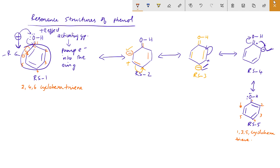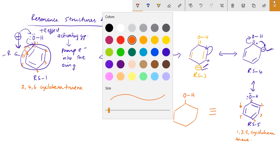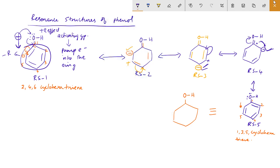Now let's look at the resonance hybrid. How does it come to the resonance hybrid? It comes from the single bond. We will incorporate all the different features. If we look at the first structure, there are double bonds at positions 2, 4, and 6. So we will draw a double bond at positions 2, 4, and 6.